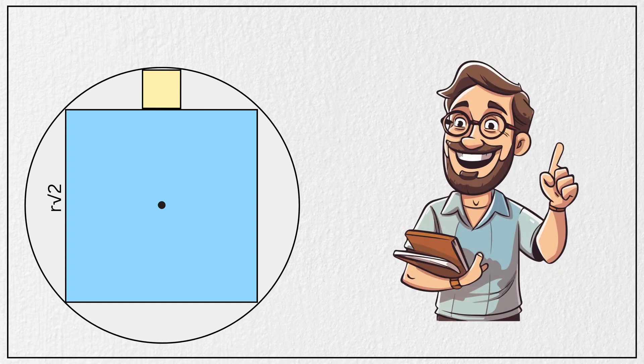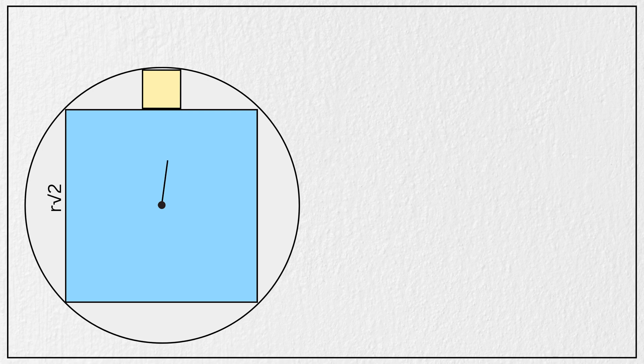To figure out its side length, we will do some helpful construction. First, let's draw a radius from the center of the circle to one of the corners of the small square like this. Next, drop a perpendicular from the center of the circle straight down to the base of the small square like this.